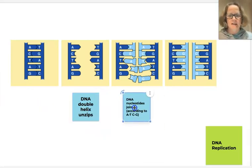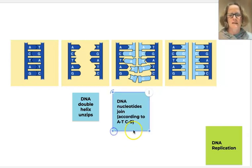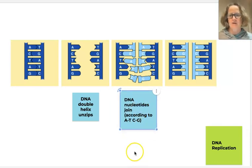The second step after we've unzipped the double helix is to join new nucleotides according to the base pairing rules. You'll see every time there's an A there's a T on the opposite strand and vice versa, and everywhere there's a G there's a C on the new strand that's being made.